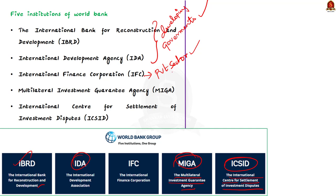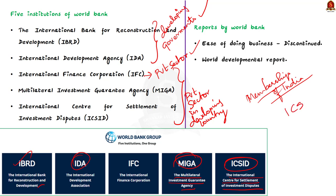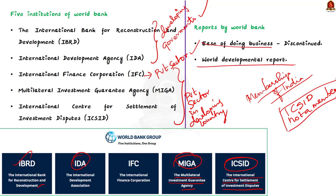The fourth and fifth institutions are the Multilateral Investment Guarantee Agency (MIGA) and the International Centre for Settlement of Investment Disputes (ICSID). The last three institutions — IFC, MIGA, and ICSID — work with the mandate of strengthening the private sector in developing countries. Regarding India's membership, India is not a member of ICSID but holds membership in all the other four World Bank institutions. The Ease of Doing Business report was recently discontinued by the World Bank alleging malpractices in the ranking.